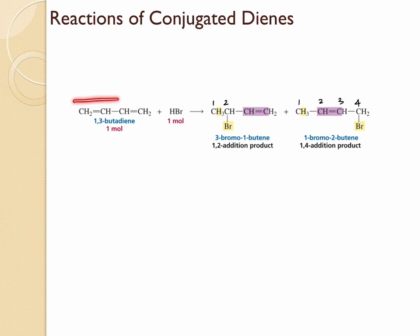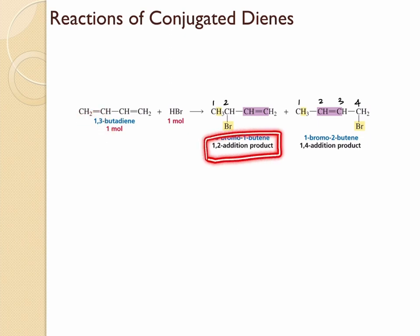When we take this symmetrical conjugated diene, the two double bonds have exactly the same reactivity. When it reacts with one equivalent of HBr, one of these double bonds undergoes electrophilic addition. If this is the double bond reacting, hydrogen is added to this carbon and Br to the adjacent carbon — that is the 1,2-addition product. But how do we get the 1,4-addition product? How does bromine jump from carbon 2 to carbon 4 and how does the double bond shift from 3-4 to 2-3? To answer this we need to look at the mechanism.